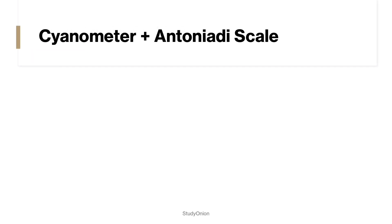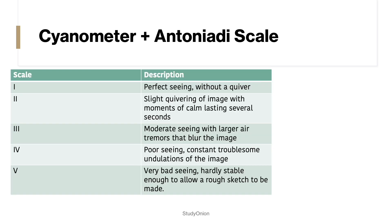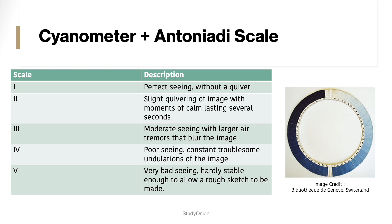Let's have a quick look at the cyanometer and the Antoniadi scale. The Antoniadi scale is used to measure seeing conditions, and the cyanometer is used to determine the blueness of the night sky.